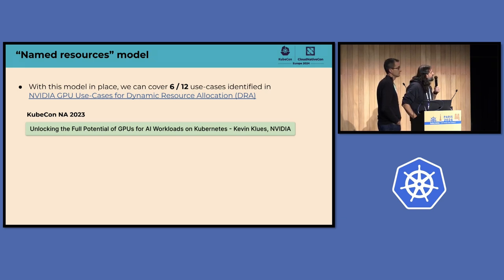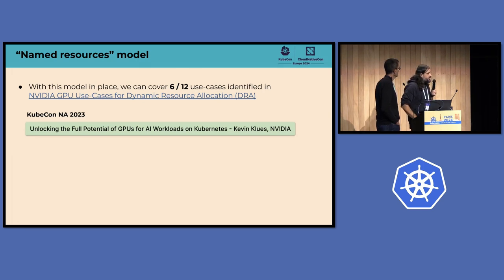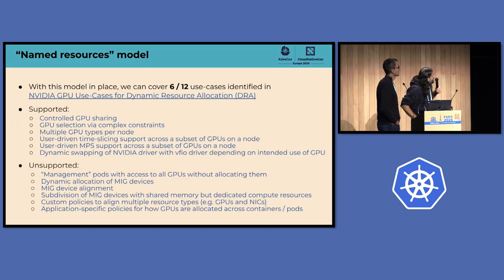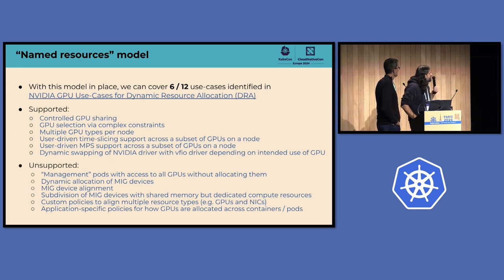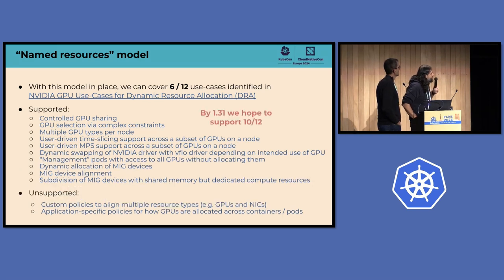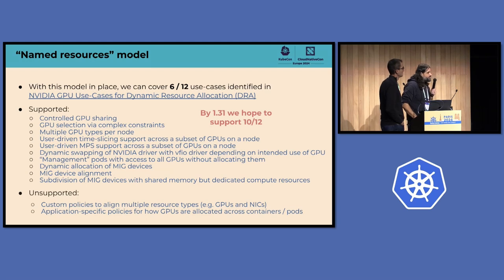Some of you may have read the document I put together called 'NVIDIA GPU use cases for dynamic resource allocation,' where I outlined 12 use cases we want to support with DRA going forward. With this simple named resources model, we already support half of those 12 use cases, which is pretty good for how simple it actually is. These are the same use cases from my talk in Chicago last November, walking through what you can't do with the existing device plugin API and what we'd like to do with DRA. By 1.31, the next release, we hope to support 10 of those 12 use cases.